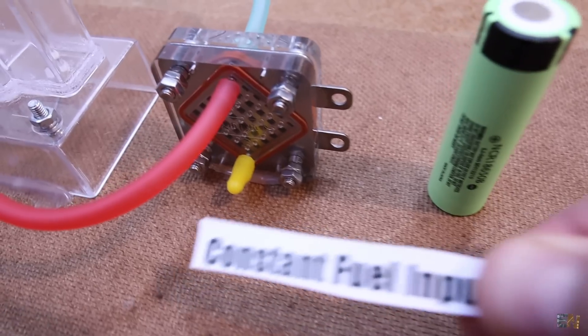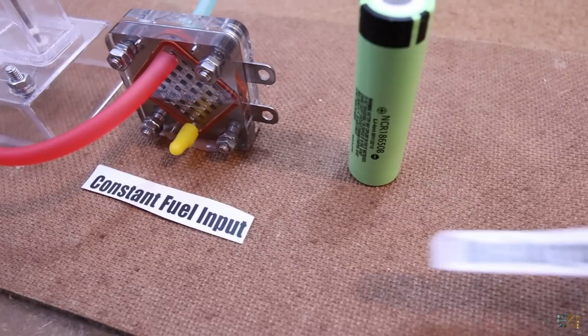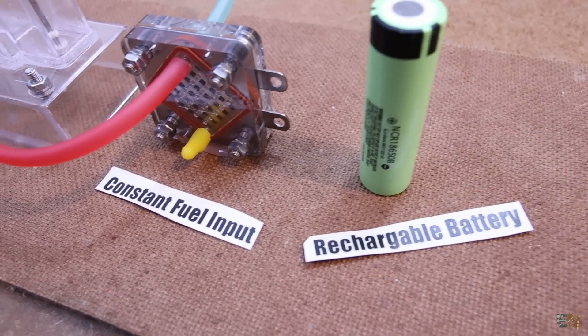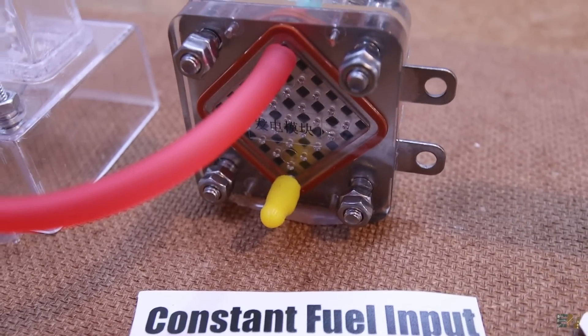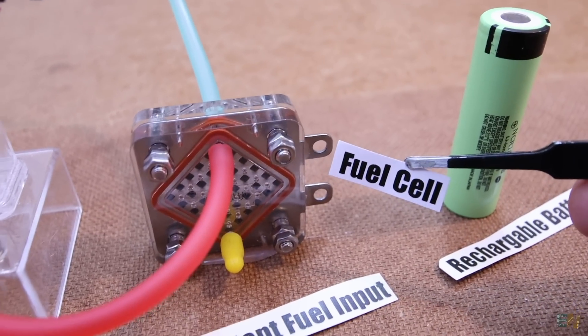This is similar to a battery but is using hydrogen and oxygen. And also compared with a normal battery, a fuel cell needs a constant fuel in order to work and is not like a rechargeable battery. That's why it's called a fuel cell and not a battery cell.